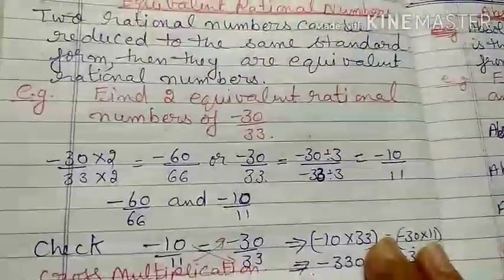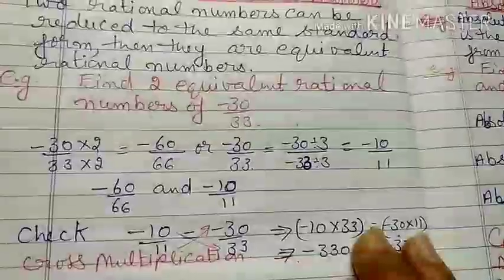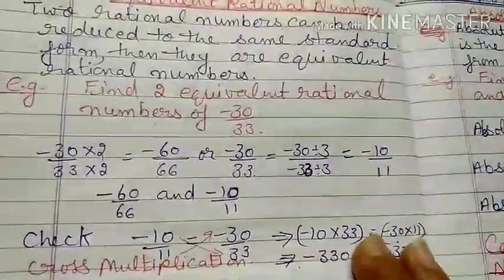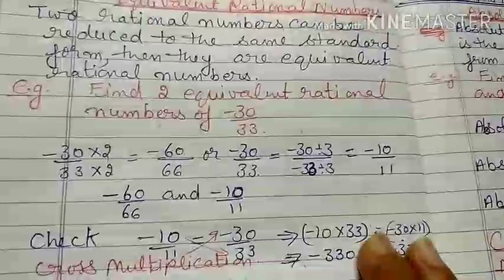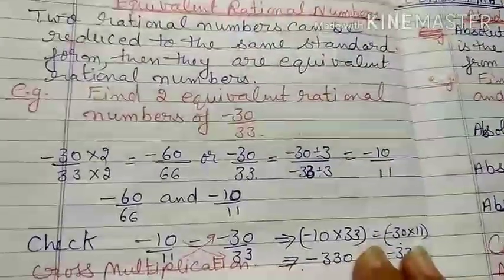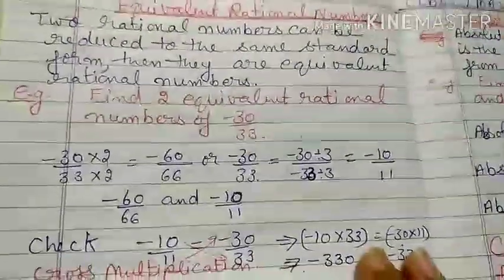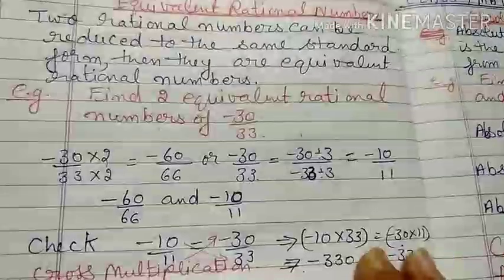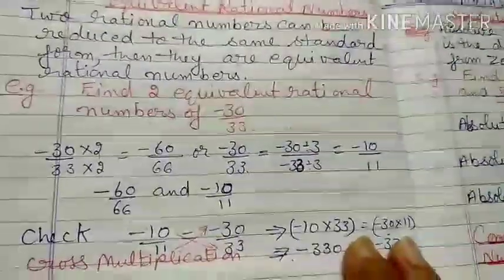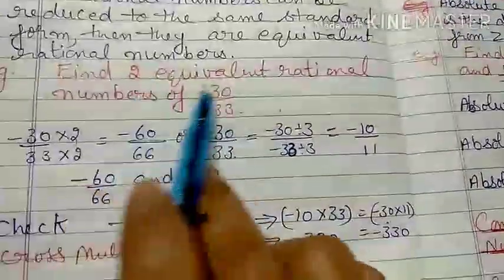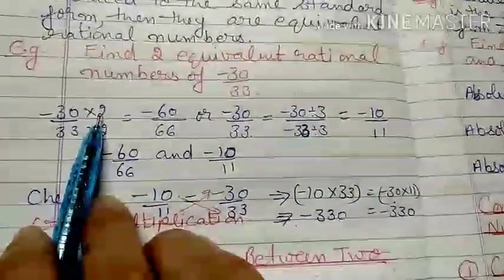Next: equivalent rational numbers. Two rational numbers that can be reduced to the same standard form are called equivalent rational numbers. If you have a rational number and want to find its equivalent fractions — as you have done with equivalent fractions before — if you multiply the denominator by any number, the same number must also be multiplied with the numerator. Similarly, if you divide, both numerator and denominator are divided by the same term.